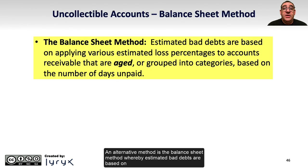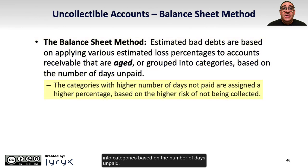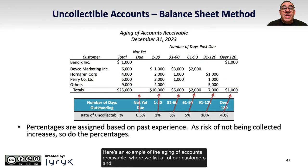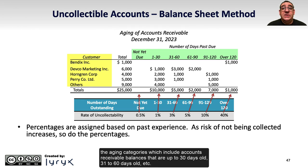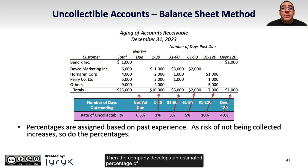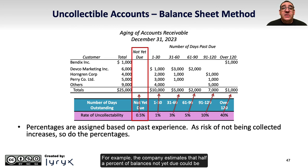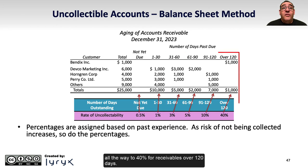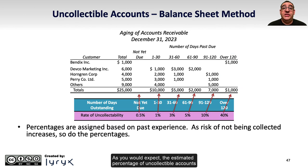An alternative method is the balance sheet method, whereby estimated bad debts are based on applying various estimated loss percentages to accounts receivable that are aged or grouped into categories based on the number of days unpaid. Categories with higher numbers of days not paid are assigned a higher percentage based on the higher risk of not being collected. In the aging schedule, accounts receivable balances are listed in categories: up to 30 days, 31 to 60 days, and so on, up to 40% for receivables over 120 days. The estimated percentage of uncollectible accounts increases as uncollected receivables get older, and these percentages are based on past experience.